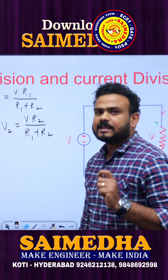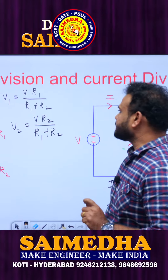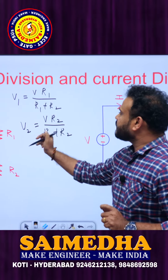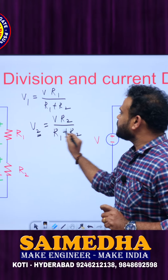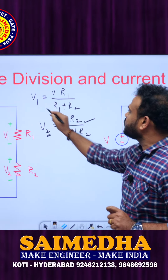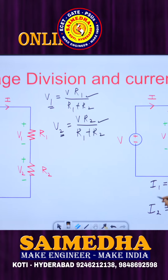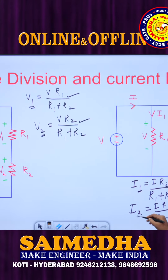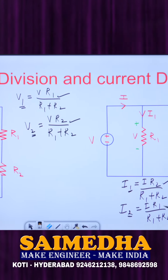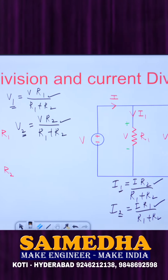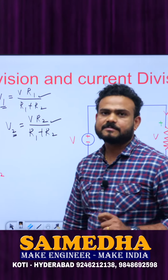The remembering point here is: for current I1, the numerator resistance is R2 (the opposite one), and for I2, the numerator resistance is R1.